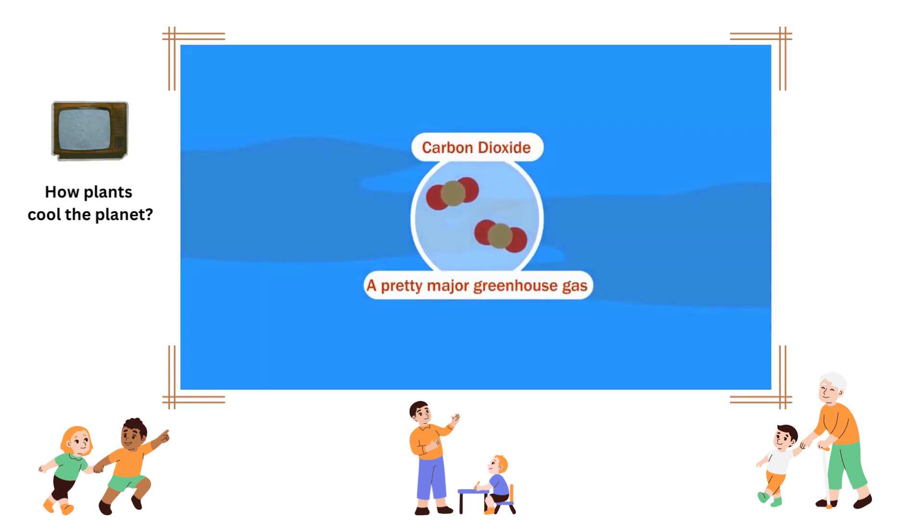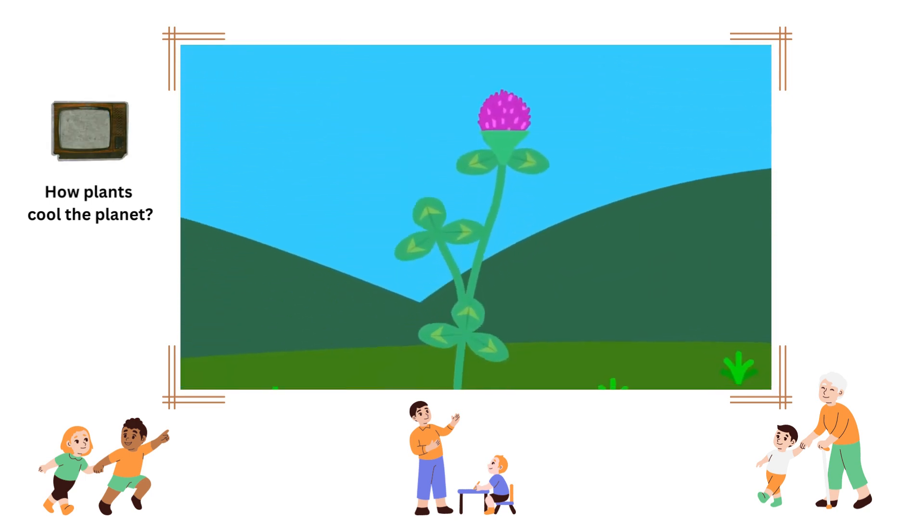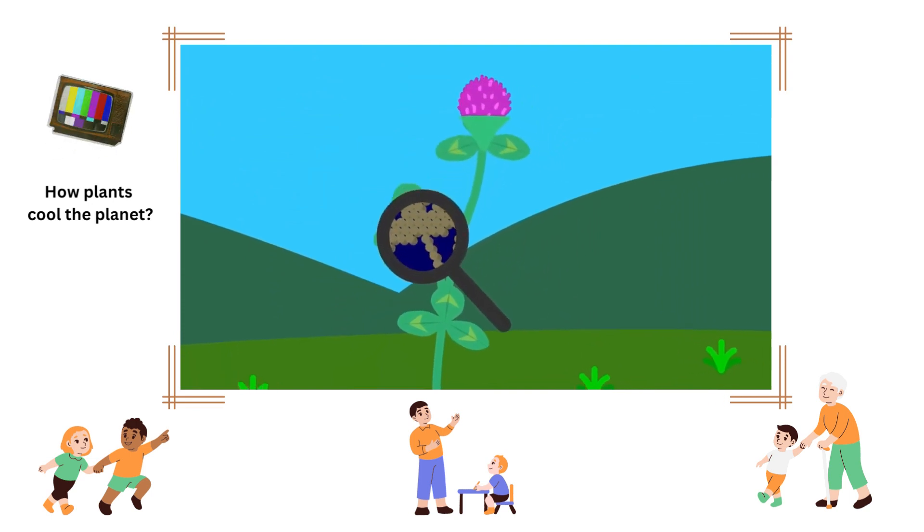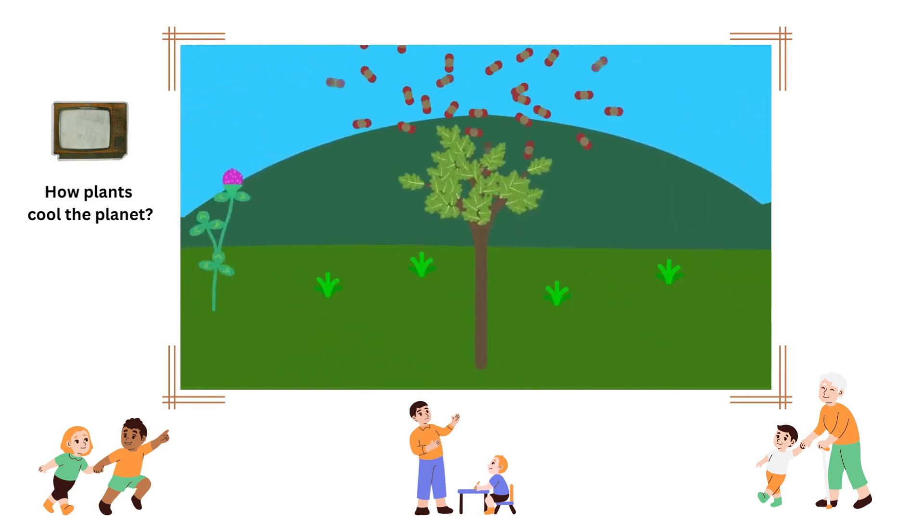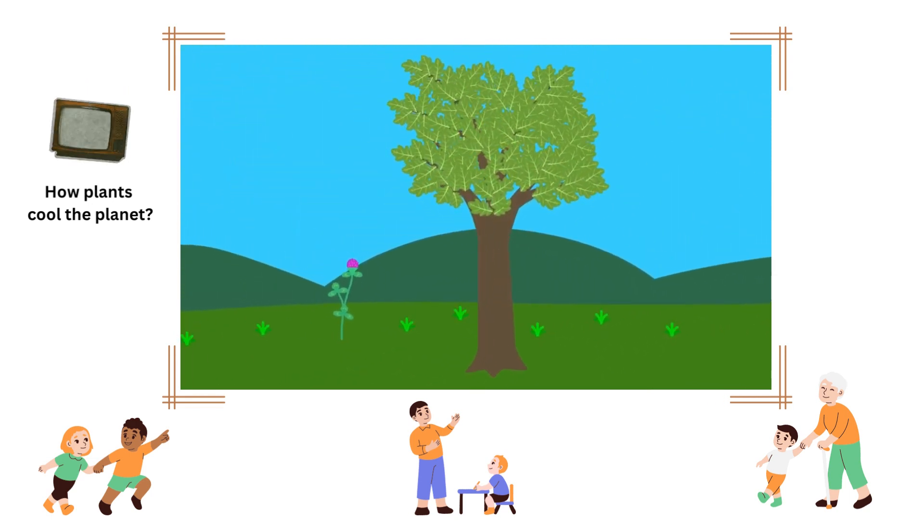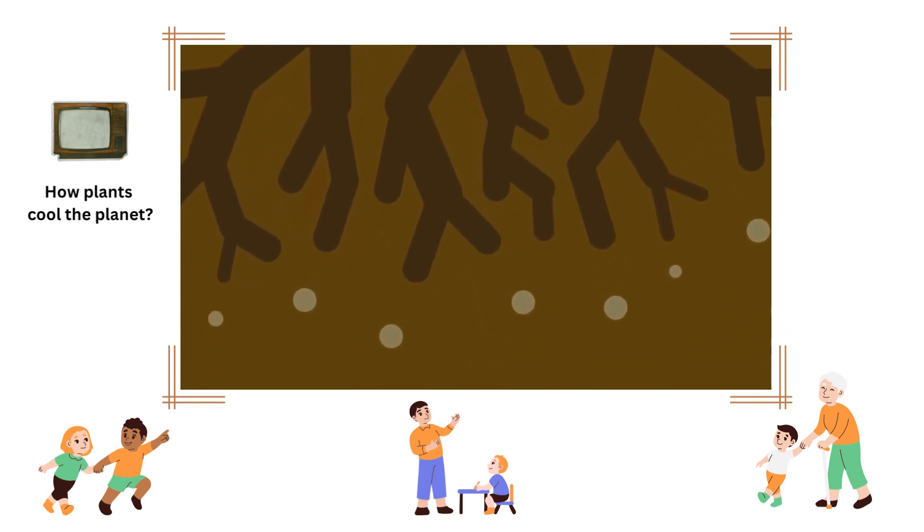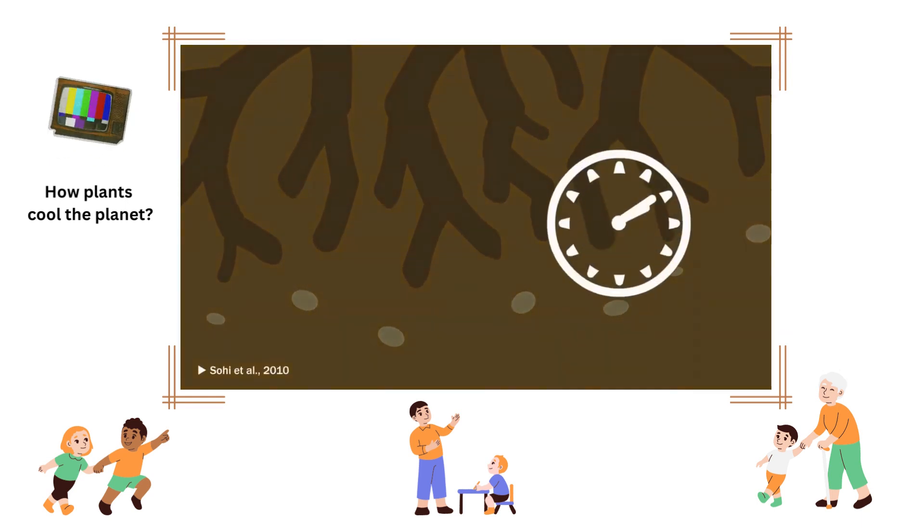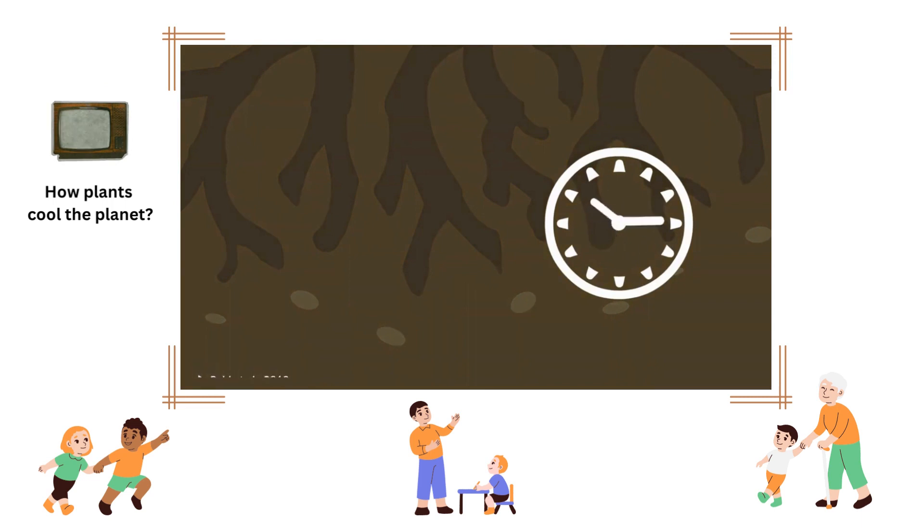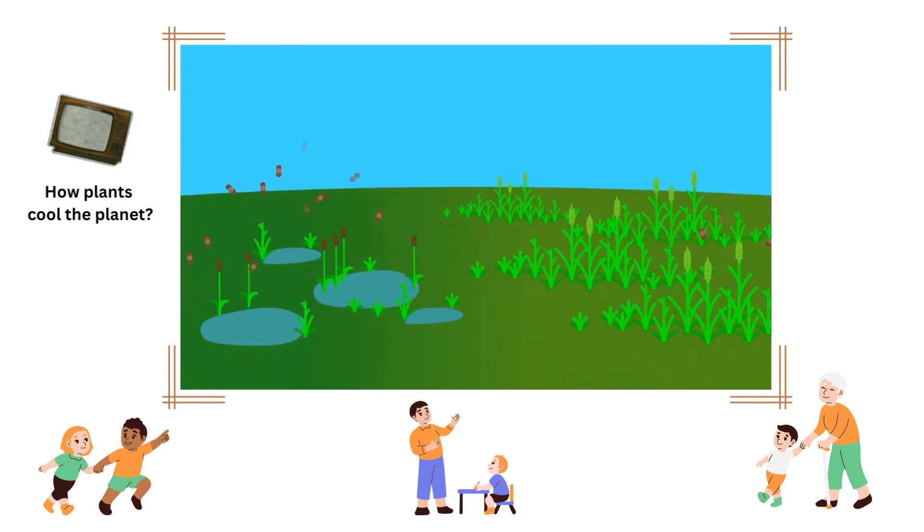You know how carbon is a pretty major greenhouse gas? Well, plants are made mostly of carbon. Not only does their growth directly take carbon out of the atmosphere, but lots of it goes underground, taking the form of their roots as well as carbon-containing compounds the roots exude. This carbon that was once in the atmosphere stays underground, sometimes for hundreds of years if left undisturbed. Grasslands and wetlands are especially good at sequestering carbon and building soil.